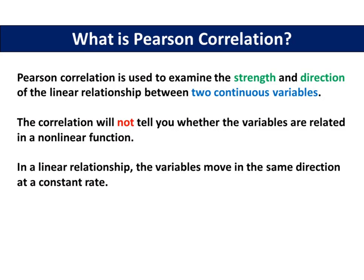What is Pearson correlation? Pearson correlation is used to examine the strength and direction of the linear relationship between two continuous variables. The correlation will not tell you whether the variables are related in a nonlinear function. In a linear relationship, the variables move in the same direction at a constant rate.